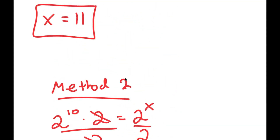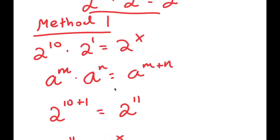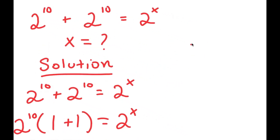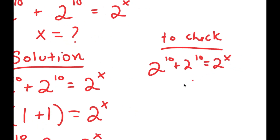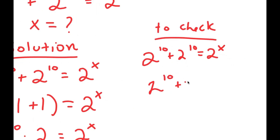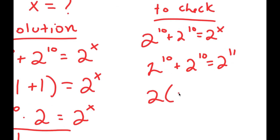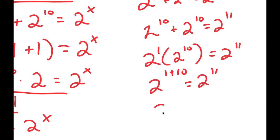As you can see, both methods give x equals 11, but method 1 is much simpler — it only took a couple of steps. Now we always have to check our answer. Our equation was 2 to the power of 10 plus 2 to the power of 10 equals 2 to the power of x. With x equals 11: 2 to the power of 10 plus 2 to the power of 10 is 2 times 2 to the power of 10, which is 2 to the power of 1 times 2 to the power of 10, equal to 2 to the power of 11. ✓